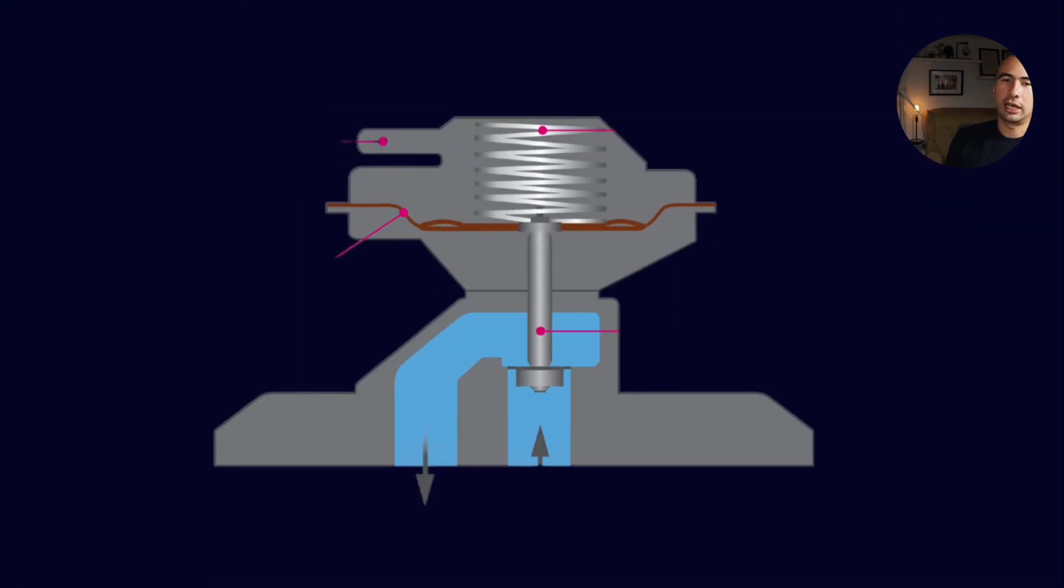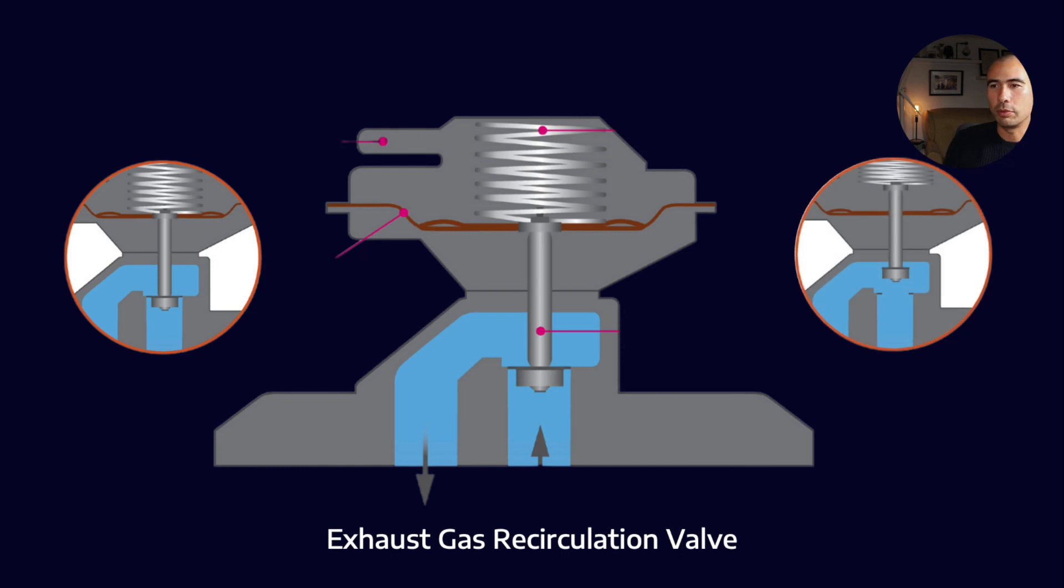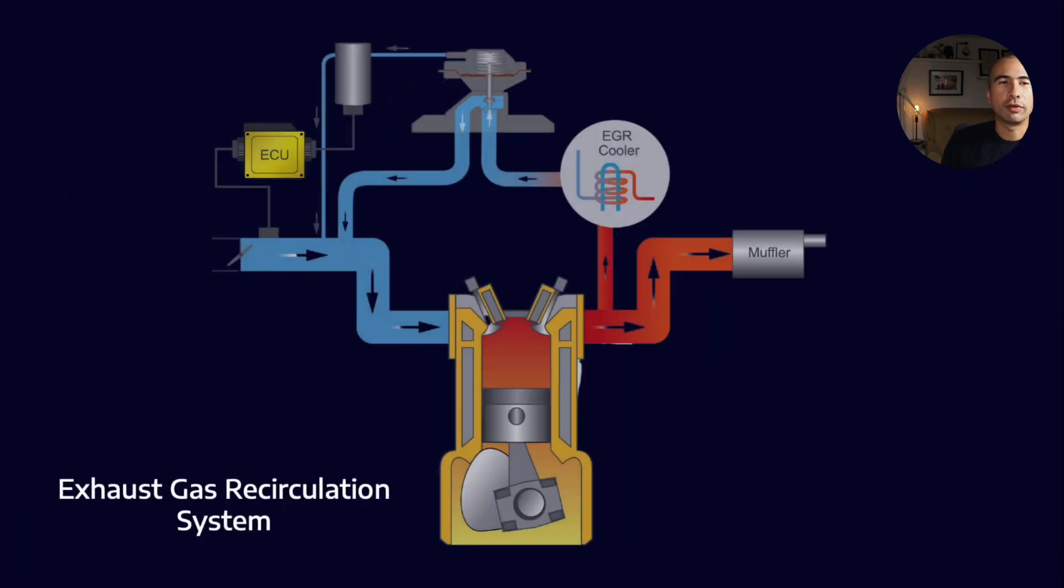Now this here is what we call an exhaust gas recirculation valve. And it's part of one of the other technologies that we've been using. The exhaust gas recirculation valve is part of an entire EGR system, which basically takes a percentage of the exhaust air and sends it back into the intake. Now you wouldn't want to do that at exhaust temperatures, so it needs to go through an EGR cooler first.